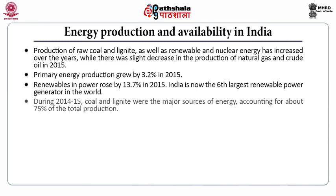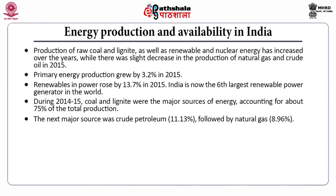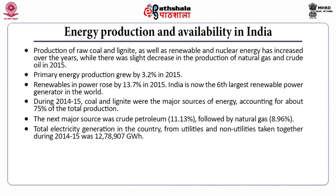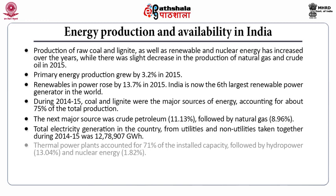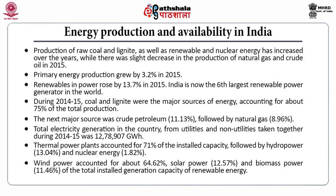During 2014-15, coal and lignite were the major sources of energy, accounting for about 75% of the total production. The next major source was crude petroleum at 11.13%, followed by natural gas at 8.96%. The total electricity generation from utilities and non-utilities during this period was 12,78,907 gigawatt hour. Thermal power plants accounted for 71% of the installed capacity, followed by hydropower at 13.04% and nuclear energy at 1.82%. Wind power accounted for 64.62%, solar power 12.57%, and biomass 11.46% of the total installed renewable energy generation capacity.